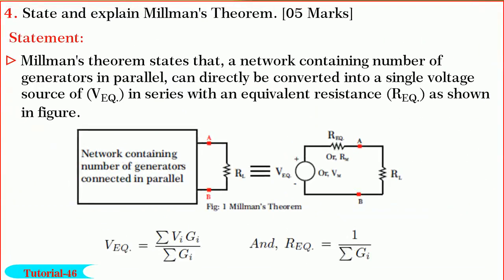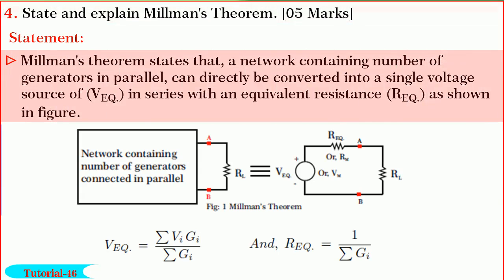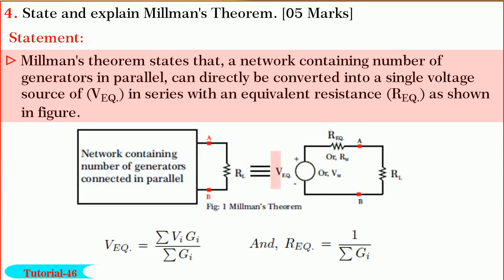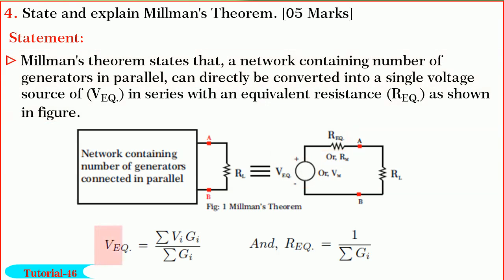Friends, next we shall answer the question on Milliman's theorem. In this question, we are required to state and explain Milliman's theorem. Milliman's theorem states that a network containing a number of generators in parallel can directly be converted into a single voltage source of V-equivalent in series with the equivalent resistance, where V-equivalent equals summation of Vi·Gi divided by summation of Gi, and R-equivalent equals 1 divided by summation of Gi.